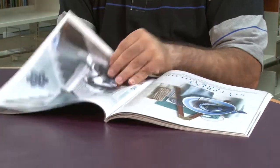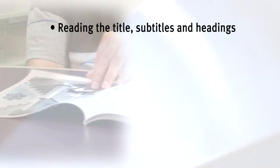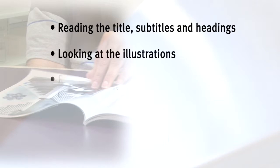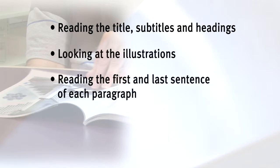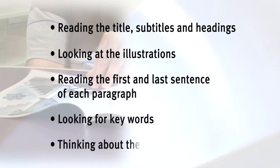Skimming is a comprehension strategy that helps readers get to know a text without reading it thoroughly. Good readers skim texts automatically, but struggling readers must be explicitly taught the steps involved in skimming, such as reading the title, subtitles, and headings, looking at illustrations, reading the first and last sentence of each paragraph, looking for key words, and thinking about the text's meaning.